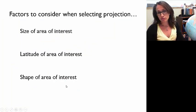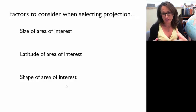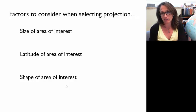If you have to choose a projection for a map, you want to think about the size of the area you're mapping, the latitude and the shape. So you want to try to get your point or line or area of tangency or where the secant intersection occurs to line up with as much of the area that you're mapping as possible to minimize your distortion.